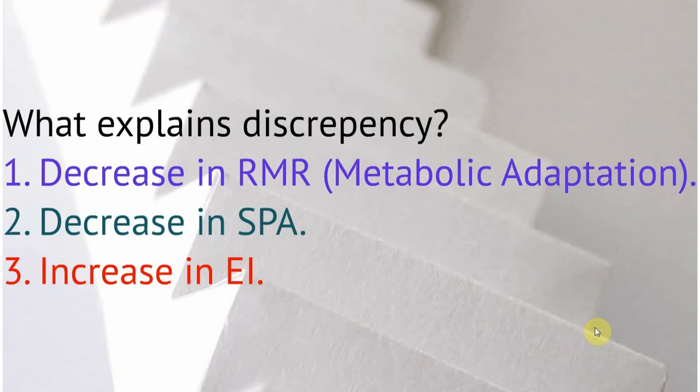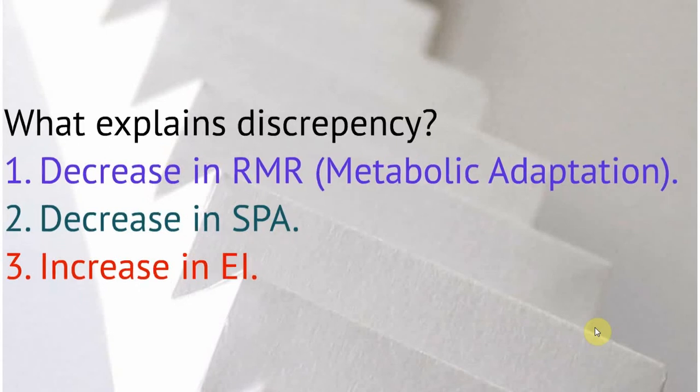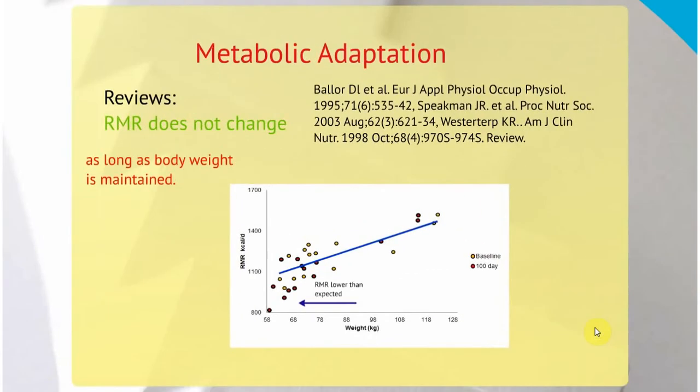There's only three things that could explain that. One is that there was a decrease in resting metabolic rate, some kind of metabolic adaptation. There could be a decrease in spontaneous activity. Or they could have increased energy intake. So those are the possibilities that explain this discrepancy. Most people think that RMR goes up. But what we really need to do is dissect apart the other variables.